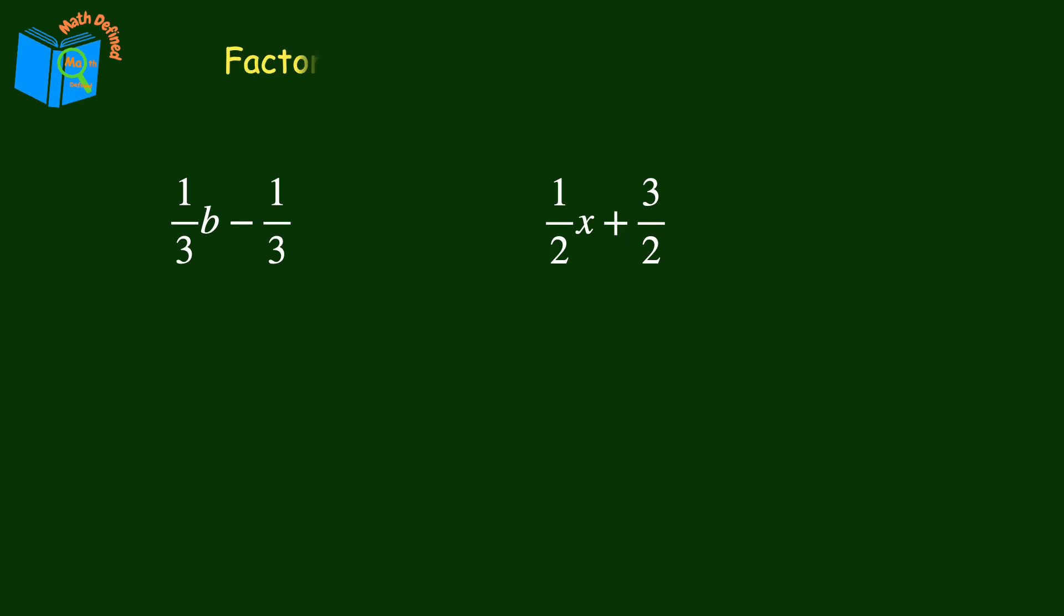Remember, factoring out is the same as dividing out. So when you are asked to factor out the coefficient, in essence you are being asked to divide it out of the expression in order to rewrite the expression as the product of the coefficient. I understand if right now this is probably sounding a lot more challenging than it really is.